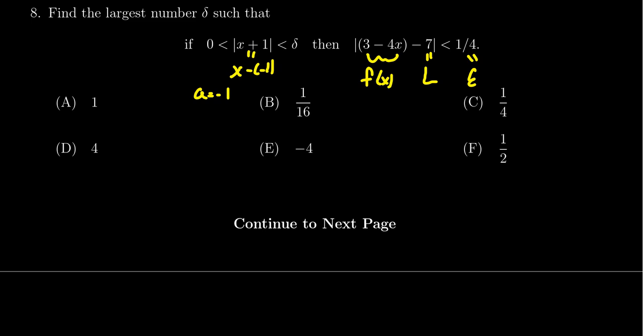To solve this algebraically, we have to solve the equation f(x) = L ± epsilon. There are two equations. One of them would be 3 - 4x = 7 + 1/4. As the answers are given as fractions, it's probably best to keep it as a fraction.